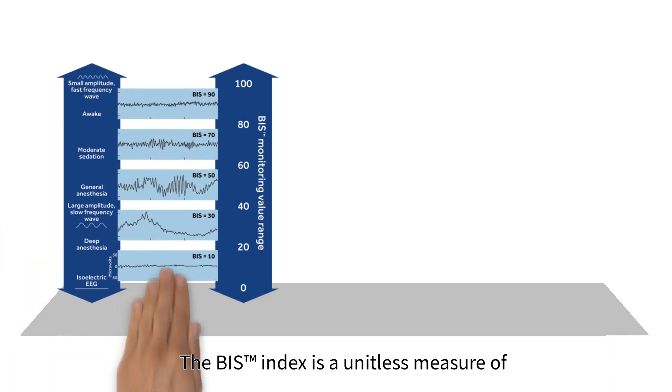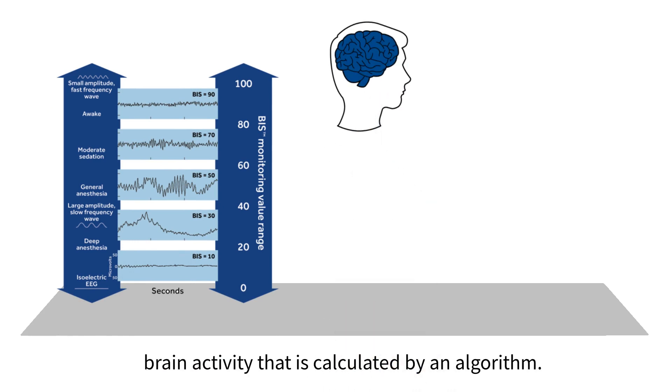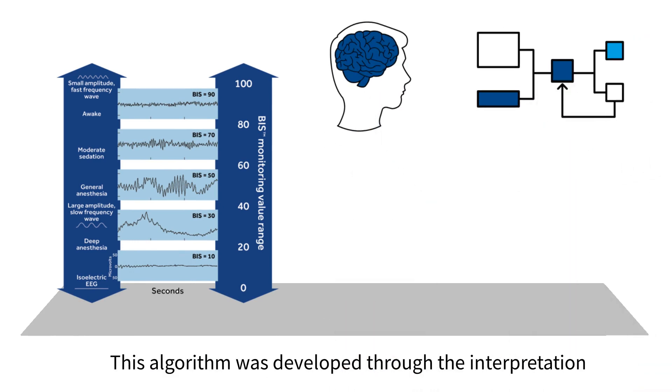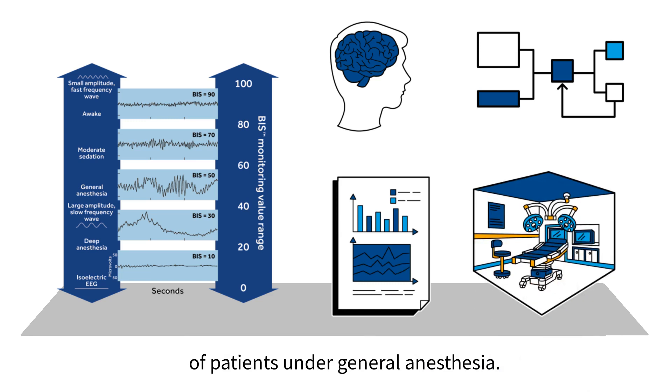The BIS index is a unitless measure of brain activity that is calculated by an algorithm. This algorithm was developed through the interpretation of a vast quantity of empirical data of patients under general anesthesia.